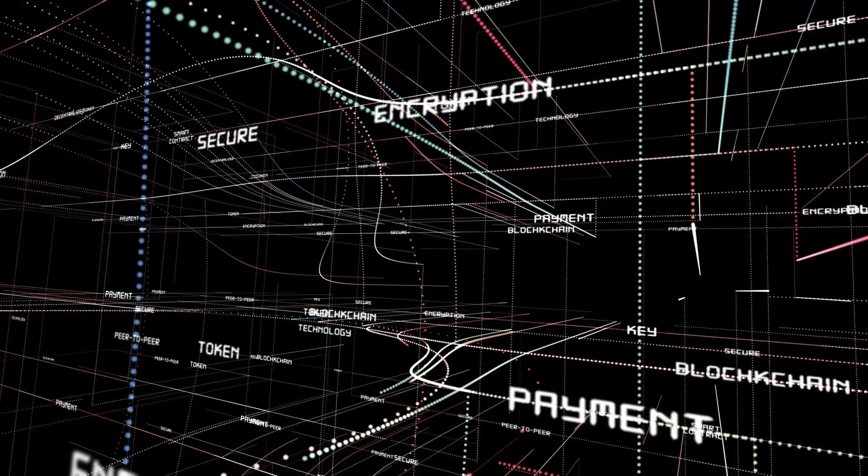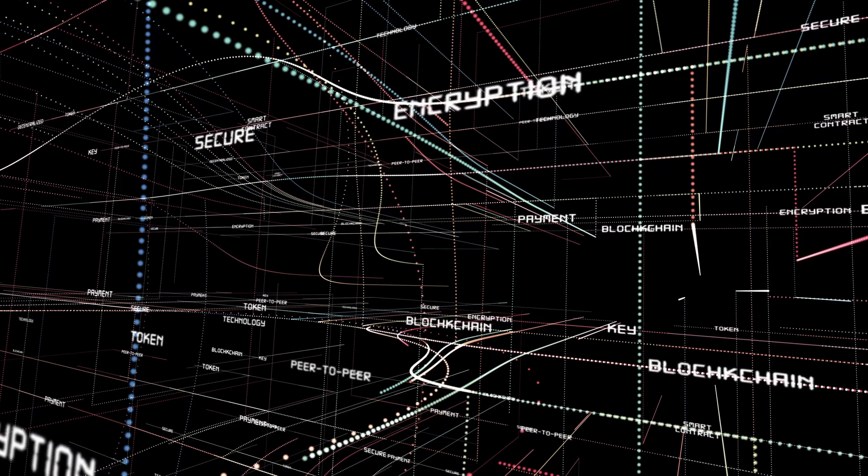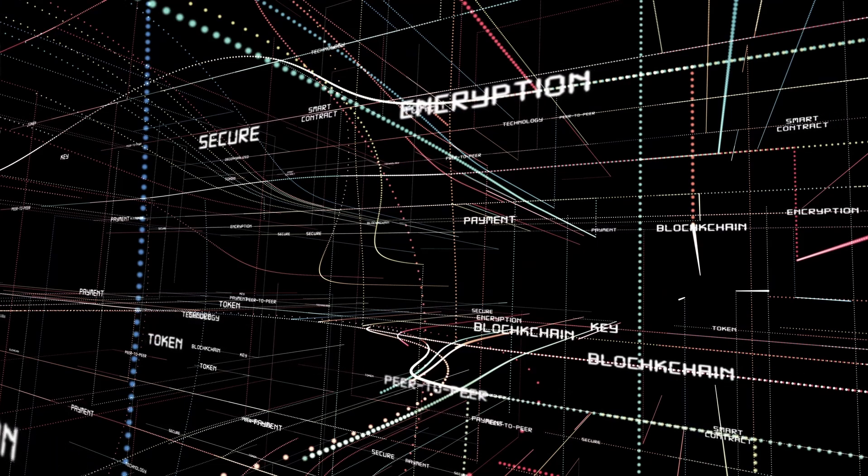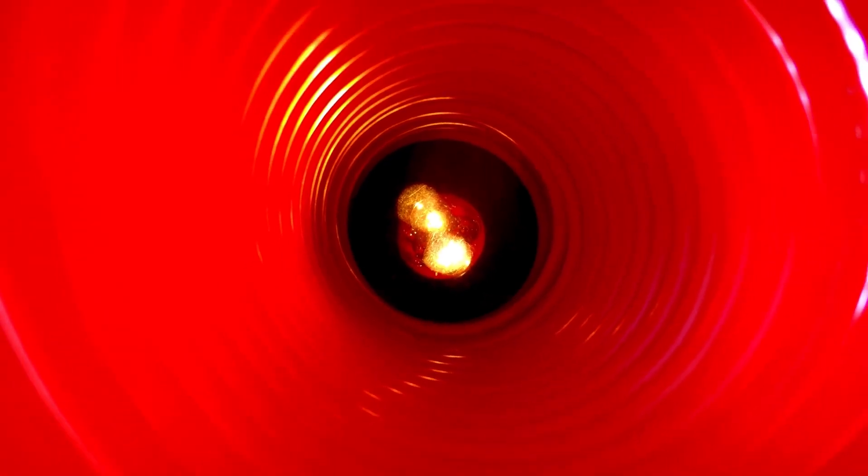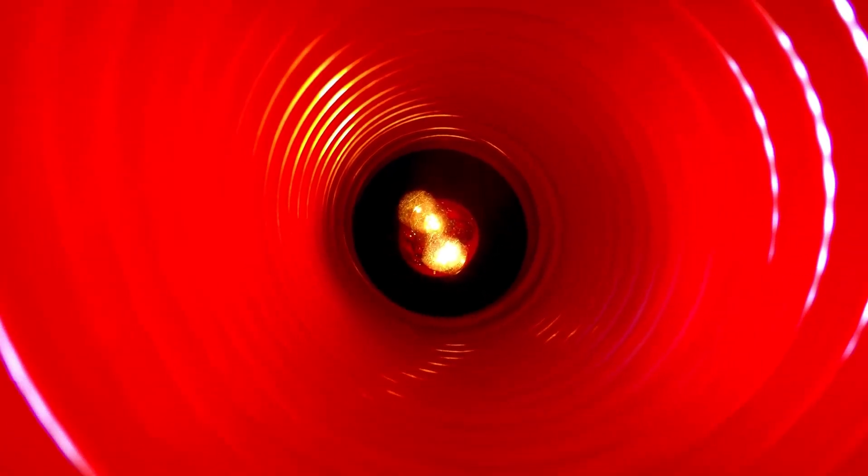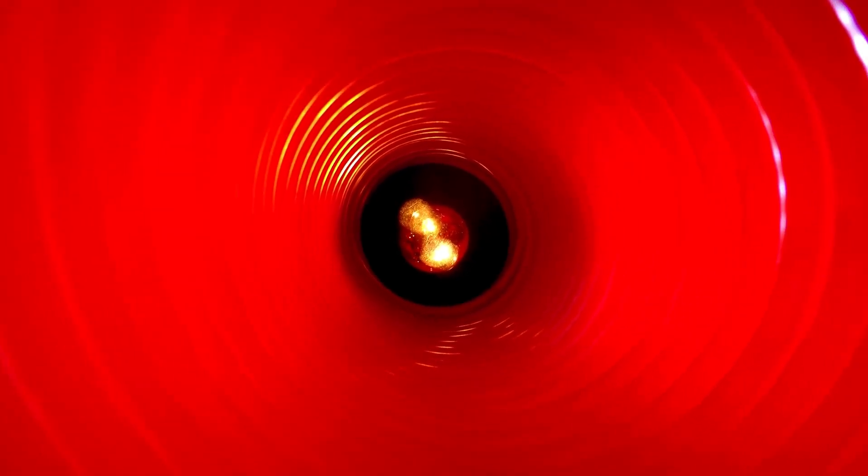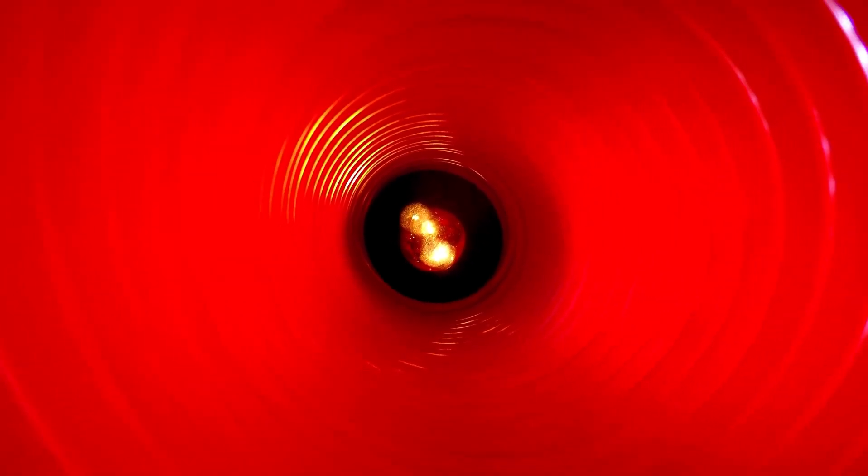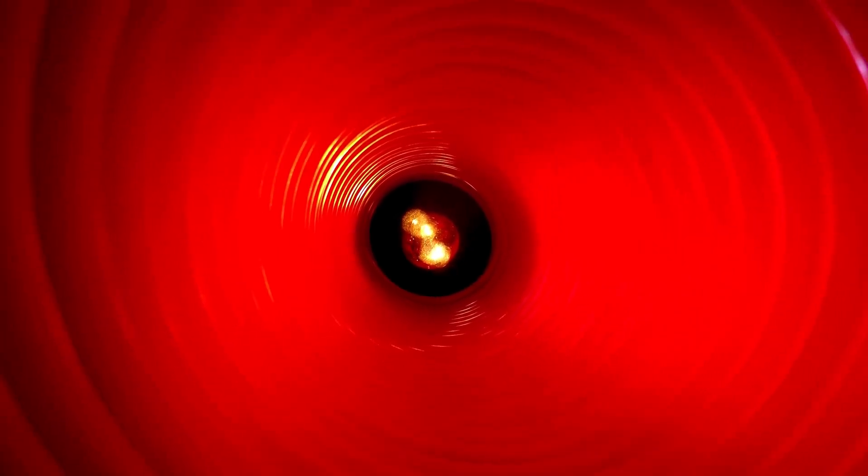This finding bluntly contradicts one of Einstein's theory of general relativity's core pillars: the event horizon as a one-way boundary. Einstein's equations state that any energy or matter passing the event horizon is forever lost to the universe, but this observation indicates otherwise.